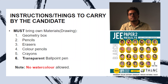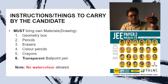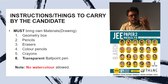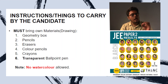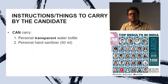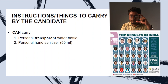JEE Paper 2 exam has a drawing section and you might be confused about what materials are allowed. Here are the items you can bring to the exam hall: geometry box, pencils, erasers, color pencils, crayons, and transparent ballpoint pen. Watercolor, acrylic paint, and poster color are not allowed — no water-based colors are permitted. For personal needs, you can bring water in a transparent water bottle, and 50ml sanitizer bottles are also allowed.